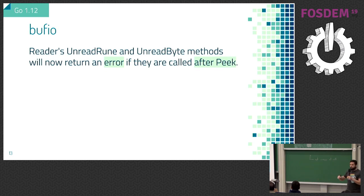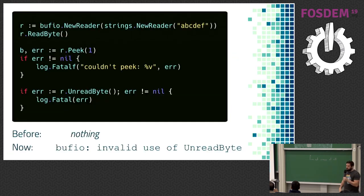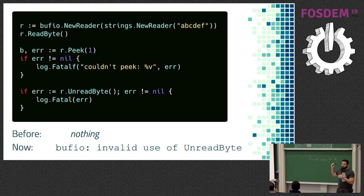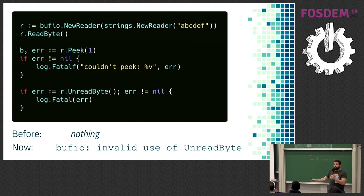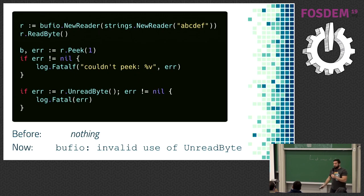The other breaking change which actually broke things is bufio. Now when you call unread rune or unread byte after doing Peek, it will fail. This means that in code where you do bufio.NewReader, and do Peek of one to look at the first character without consuming it, if you then call unread, previously it would work — but in some random cases it would fail. Now it will always fail. Your code was already wrong; now it's more wrong.